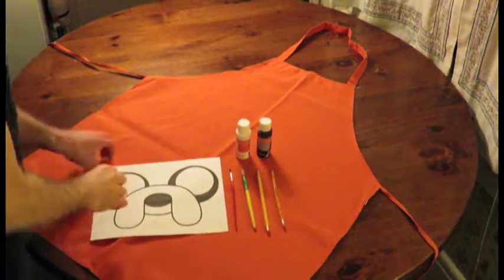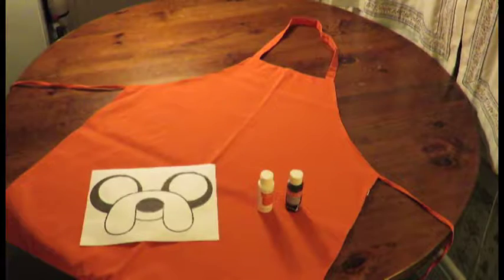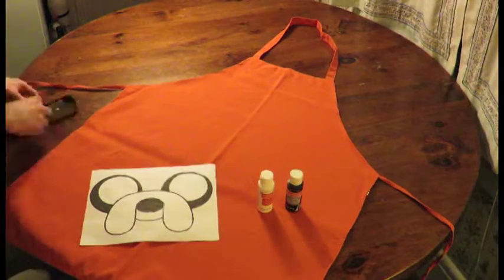The download link for this Jake the Dog template is in the video description box. I found this plain orange apron on Amazon for cheap. The only other materials you'll need are black and white paint and a pencil.